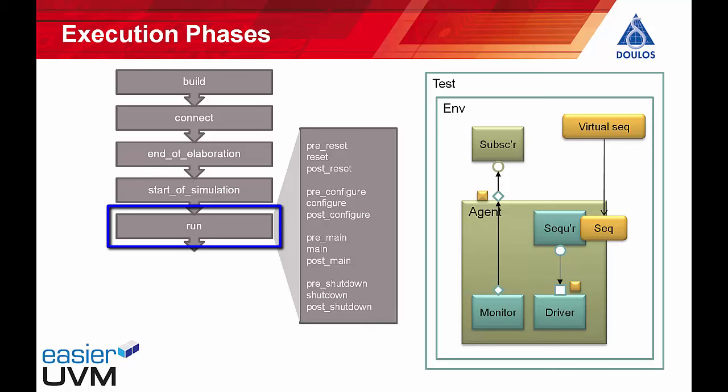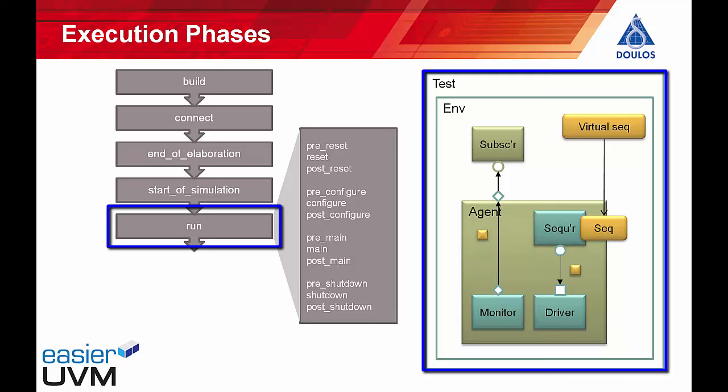It's during the run phase that sequences execute, transactions are generated, processes execute, and time passes — so what you normally think of as simulation happens during the run phase. The run phase can be further subdivided into a number of UVM runtime phases — these 12 optional phases can be used to synchronize activities within the run phase. Then when simulation is notionally over, there are further housekeeping phases for post-processing: the extract phase, the check phase, the report phase, and the final phase. The names of these phases are highly suggestive of what they're meant to be used for.